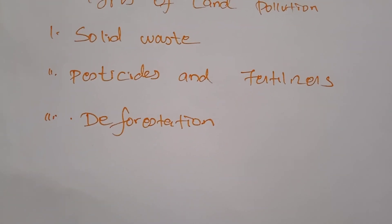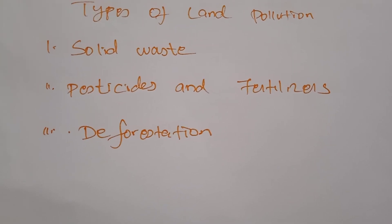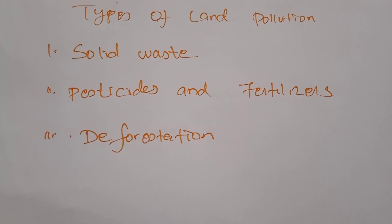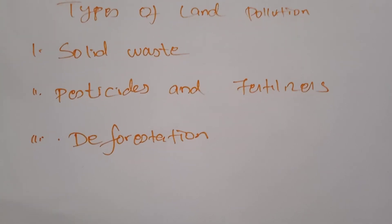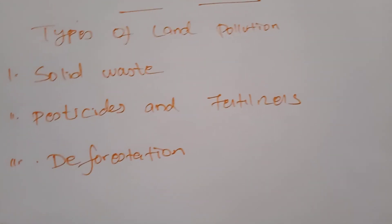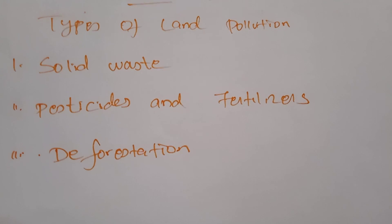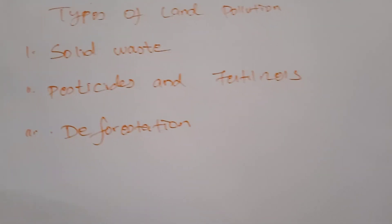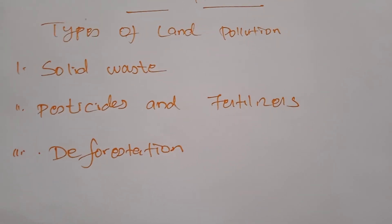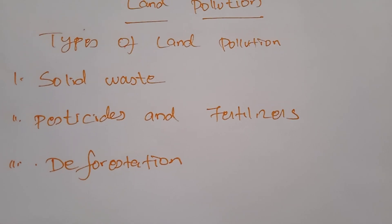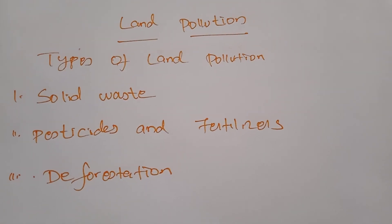Next, deforestation. Humans depend on trees for many things, including life. Trees absorb carbon dioxide from the air and release oxygen, which is needed for life. The forest helps replenish soils and helps retain nutrients. Deforestation leads to land pollution — whenever deforestation happens in our nation, it also creates land pollution.